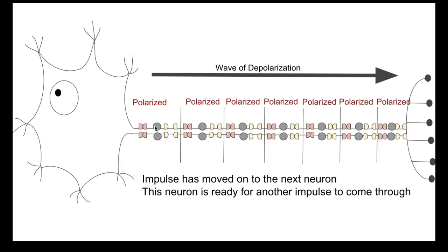That is basically how an impulse happens on the neurons. If you have any questions, please let me know. For your drawing quiz, you're going to have to draw the three diagrams: at rest, during action potential, and during recovery. You should know the charge at each stage and the really fancy names — polarized versus depolarized versus repolarized — and be able to explain the movement of the ions at each part.